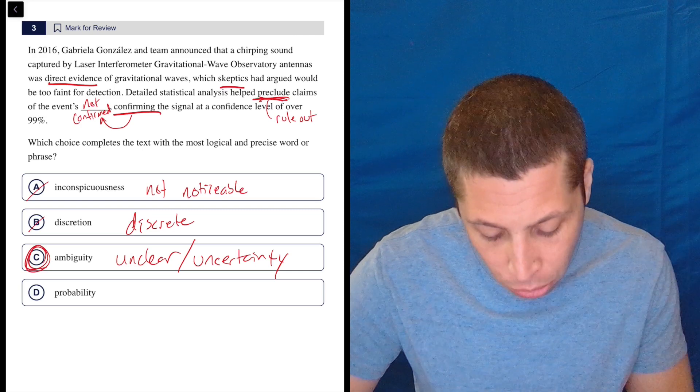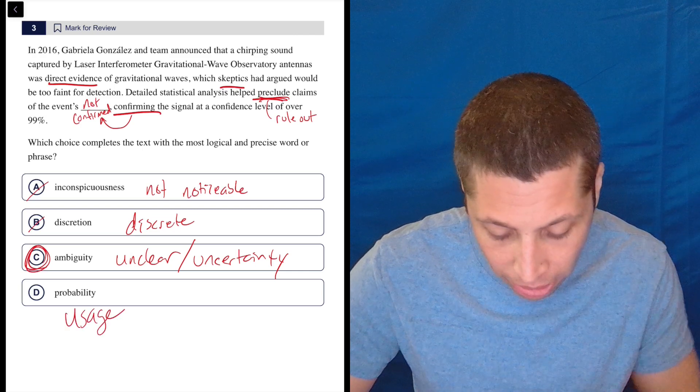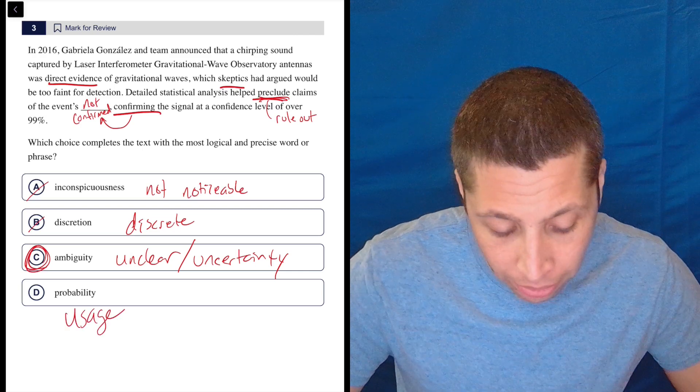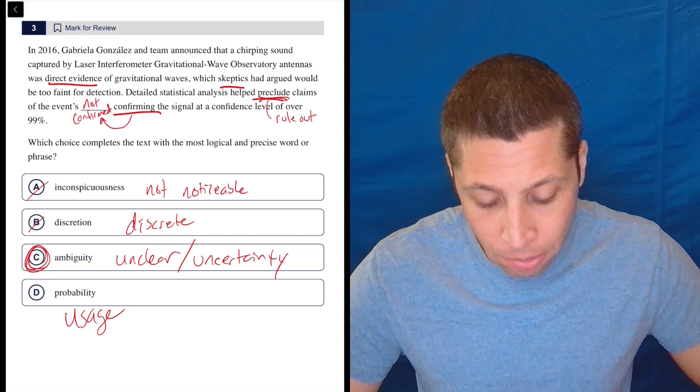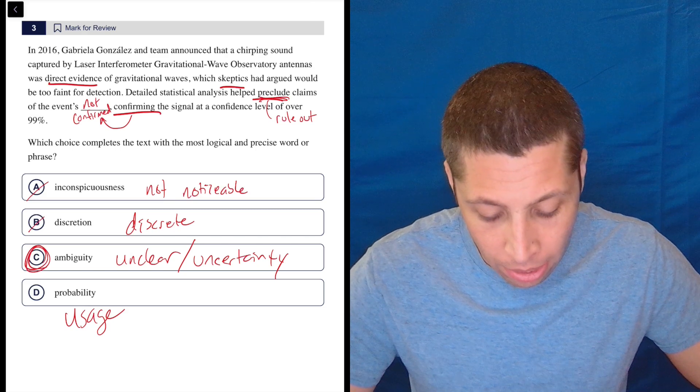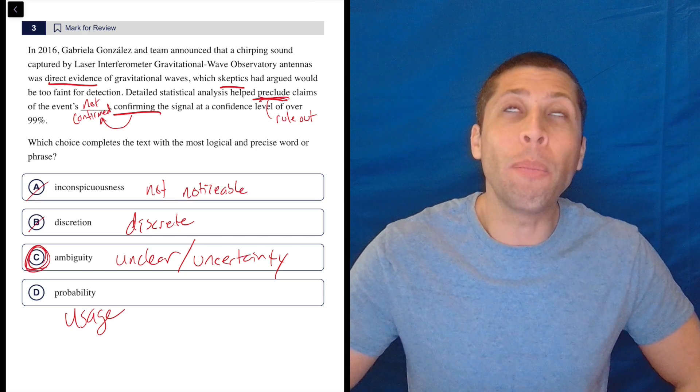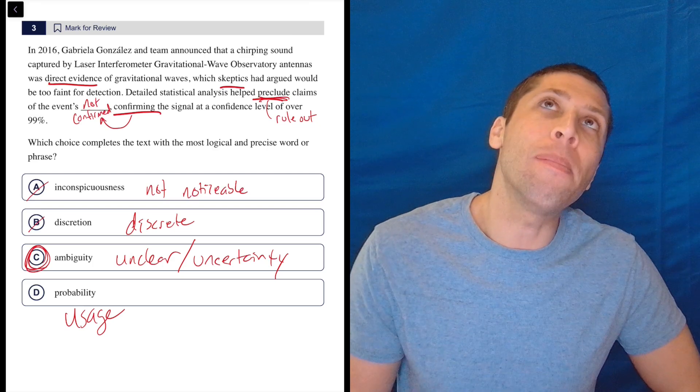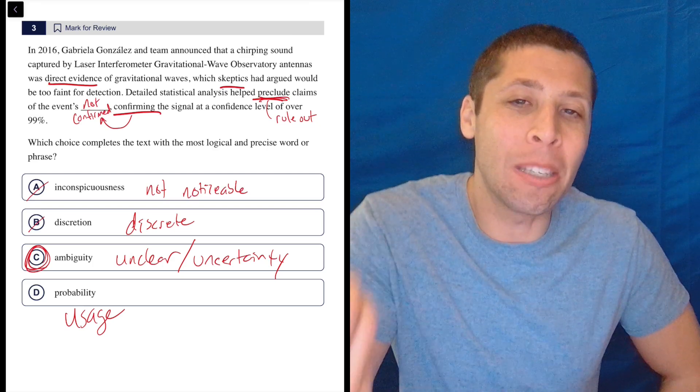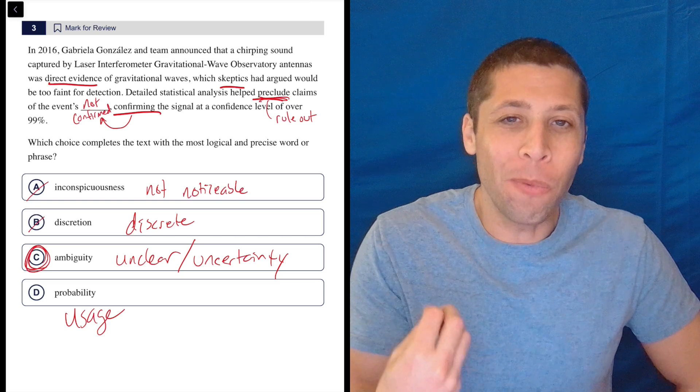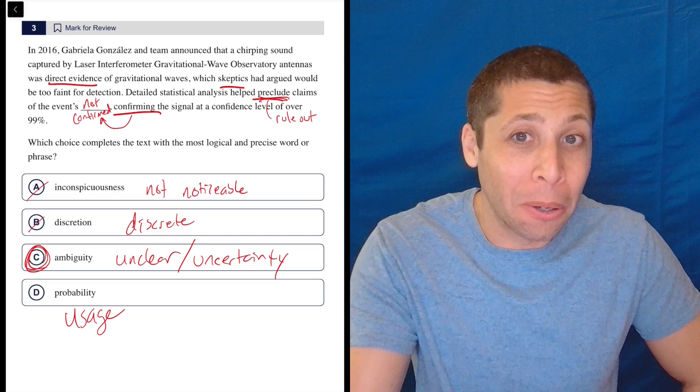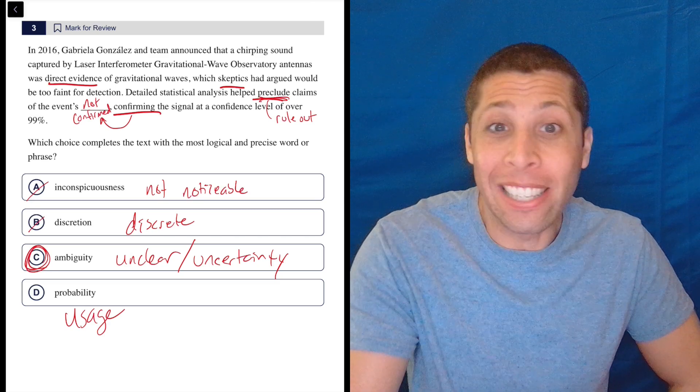It doesn't really work here though, because it's more of a usage issue. That just feels really strange to put in there. But let's think about it. Rule out claims of the event's probability. When we say probability in that way, we're kind of saying it is probable.